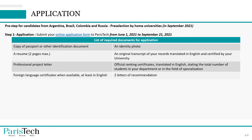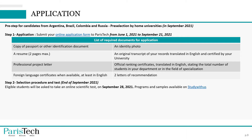Alongside the application form, you must submit several required documents: a copy of your passport or another identification document, an identity photo, a resume, an official transcript translated into English and certified by your university, a professional project letter, official ranking certificates translated into English stating the total number of students in your department or field of specialization, foreign language certificates when available at least in English, and two letters of recommendation. The second step is the selection test: eligible students will be asked to take an online scientific test on September 28th, 2021.